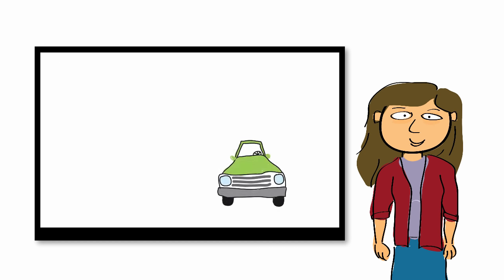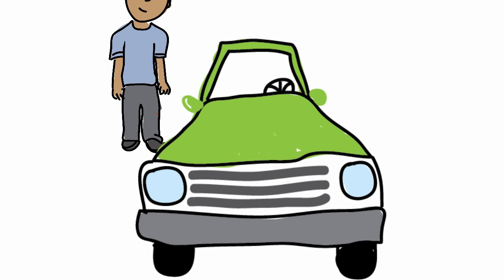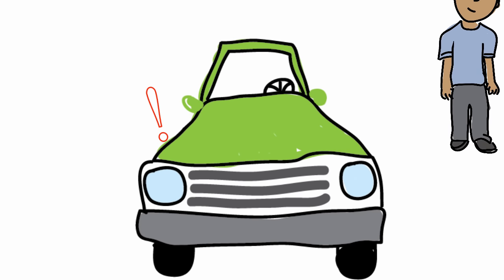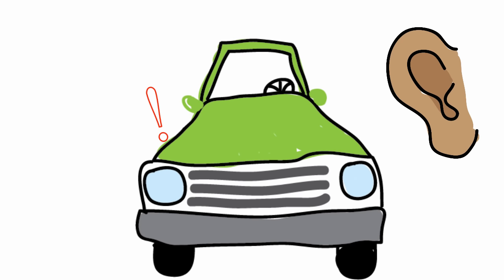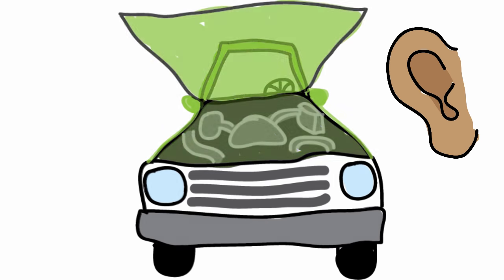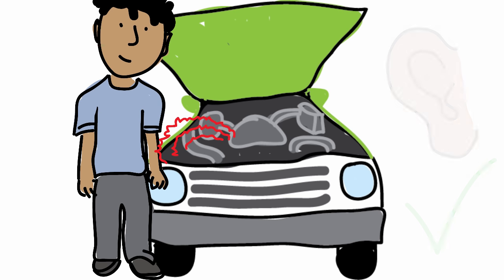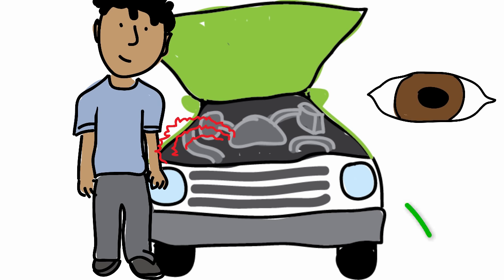You notice that your car is making a squeaking noise when it's running. You walk around the car and listen for where the sound is coming from. You notice that one of the parts is wiggling around. By listening to locate the source of the sound, you used your auditory perception, and you've confirmed it with visual perception.